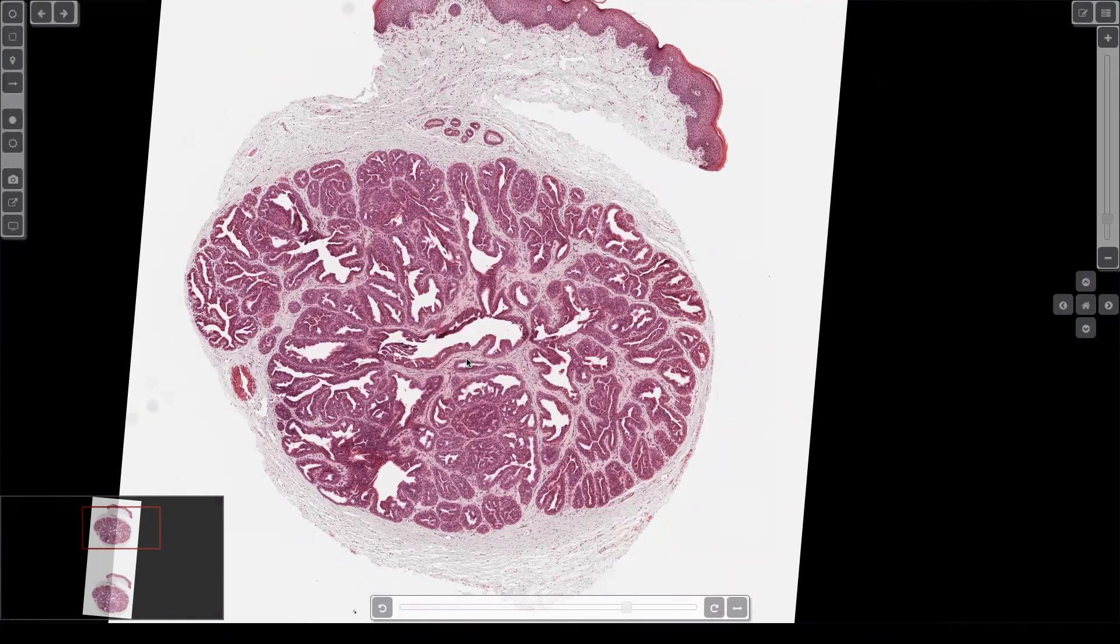If you see something on the hands or fingers or toes that looks like this or looks like SCAP, what is it until proven otherwise? Yeah, digital papillary adenocarcinoma, which used to be called aggressive digital.